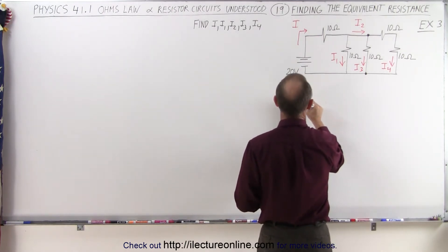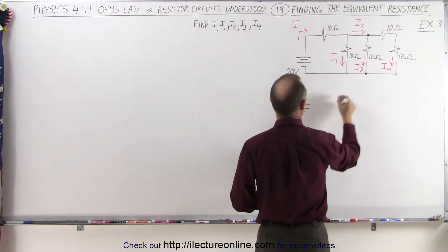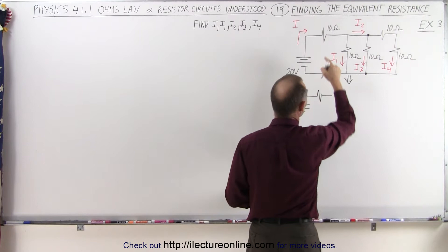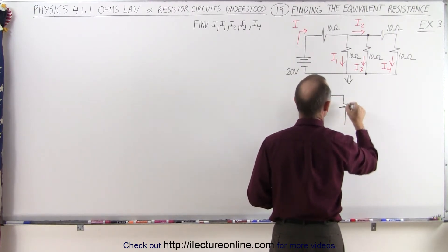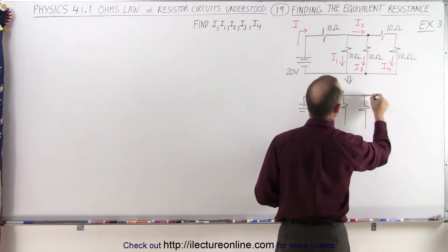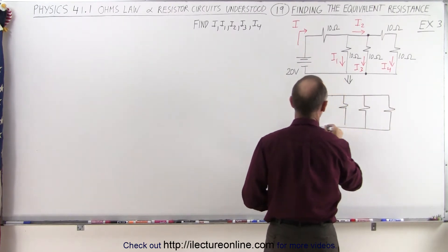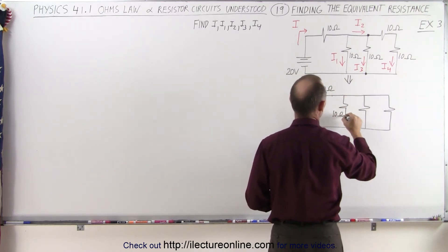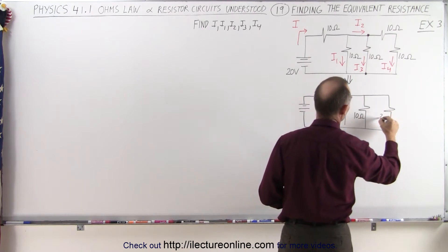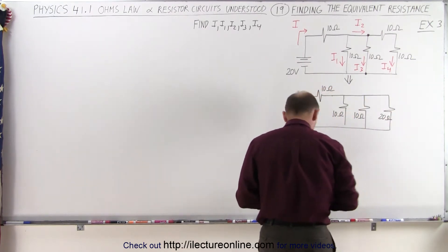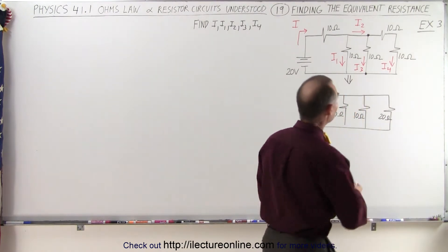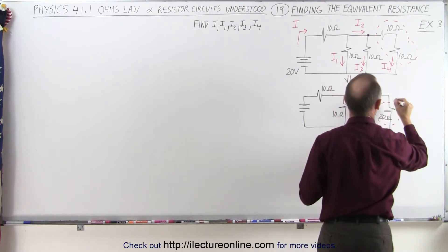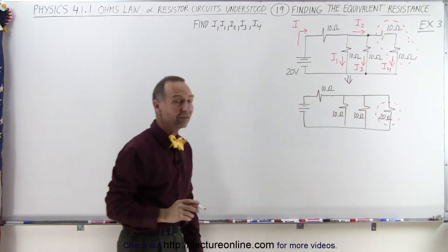So let's go ahead and do that — we redraw the circuit. This circuit will now look as follows: we still have our single 10 ohm resistor in that branch, a 10 ohm resistor here, a 10 ohm resistor there, and these two resistors together will turn into a single 20 ohm resistor. So that's 10 ohms, 10 ohms, 10 ohms, and a 20 ohm resistor. We took those two resistors and turned them into one single resistor; everything else stays the same.